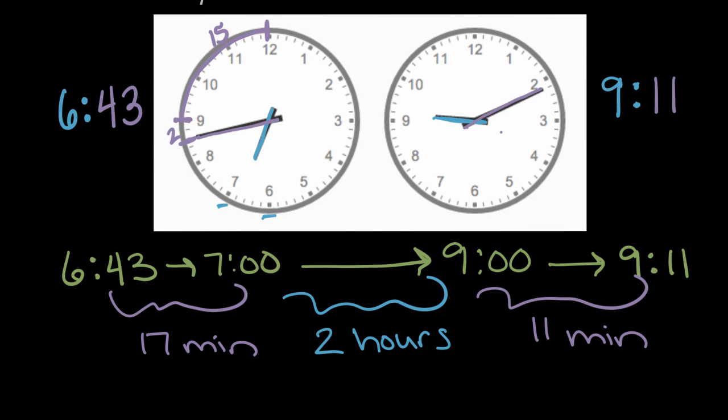So in total, from 6:43 all the way to 9:11 is 17 minutes plus two more hours plus 11 minutes. We can write that as two hours...